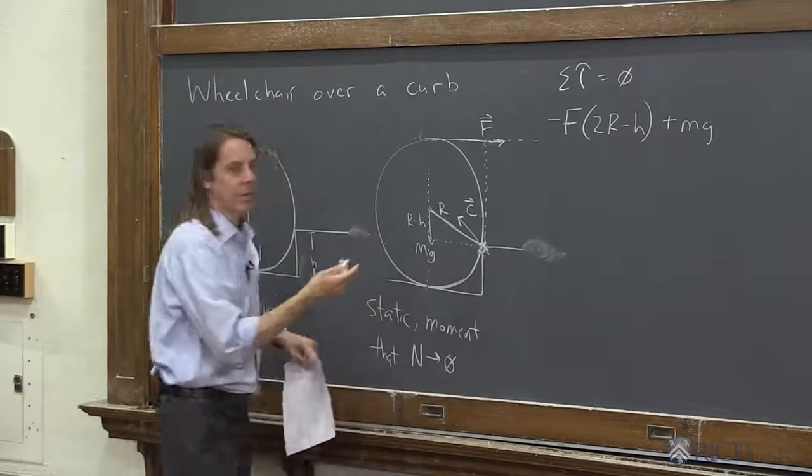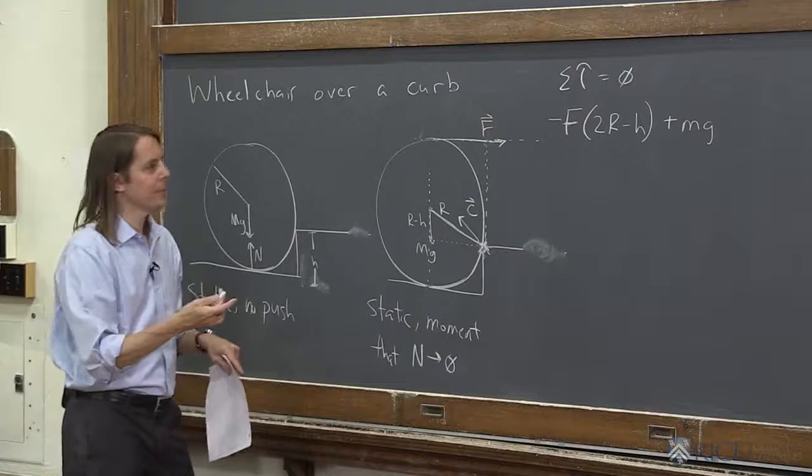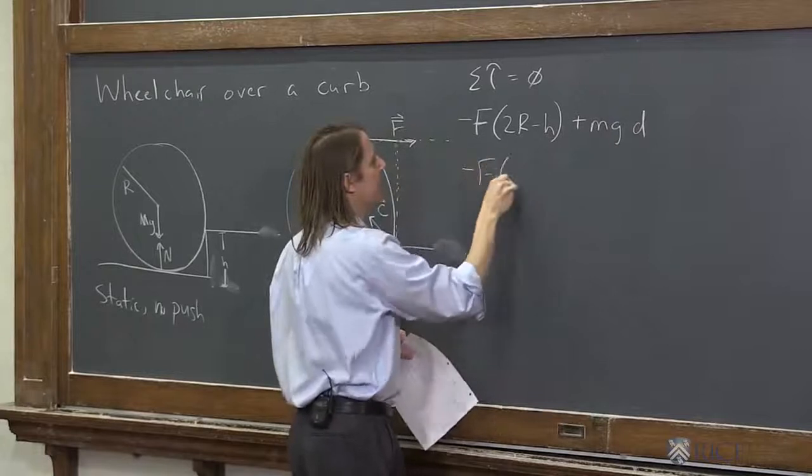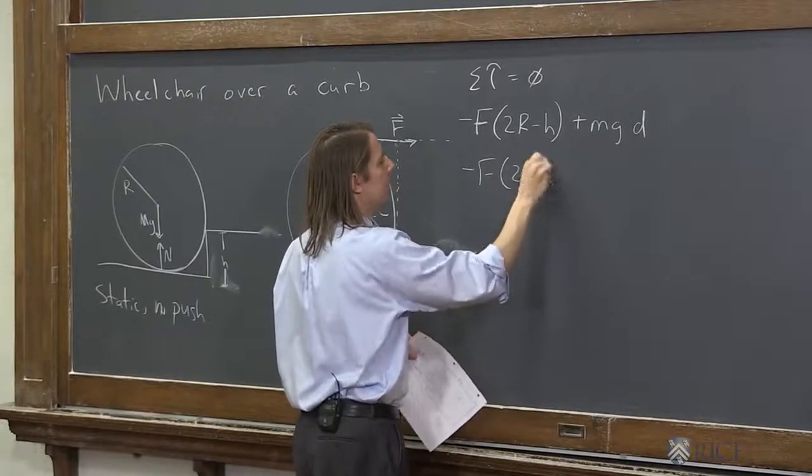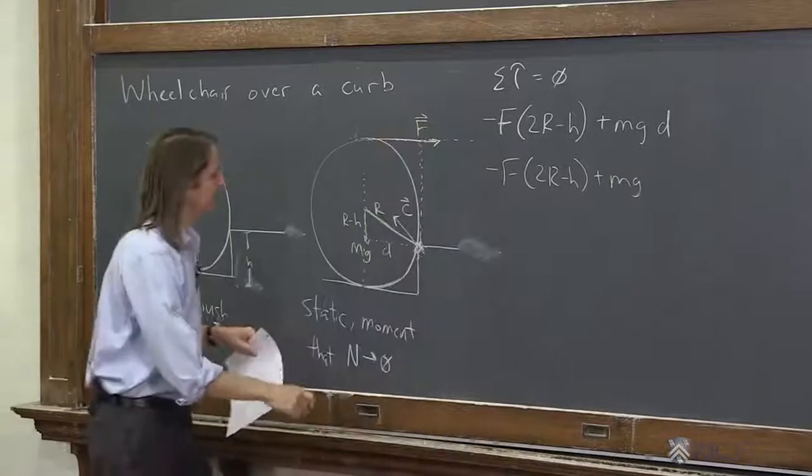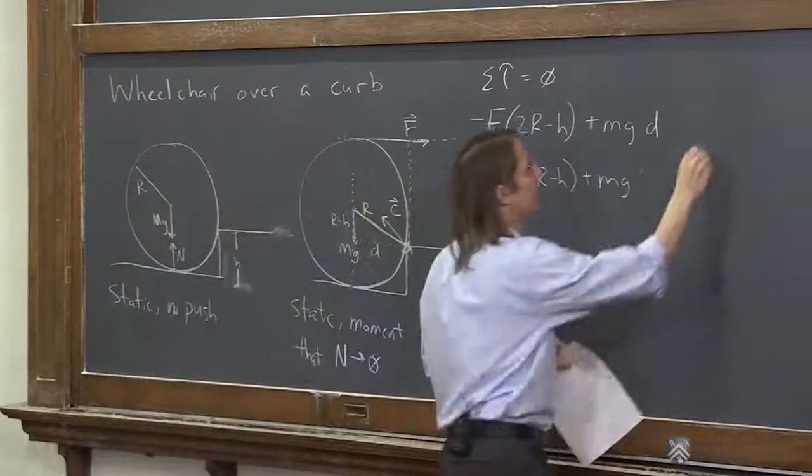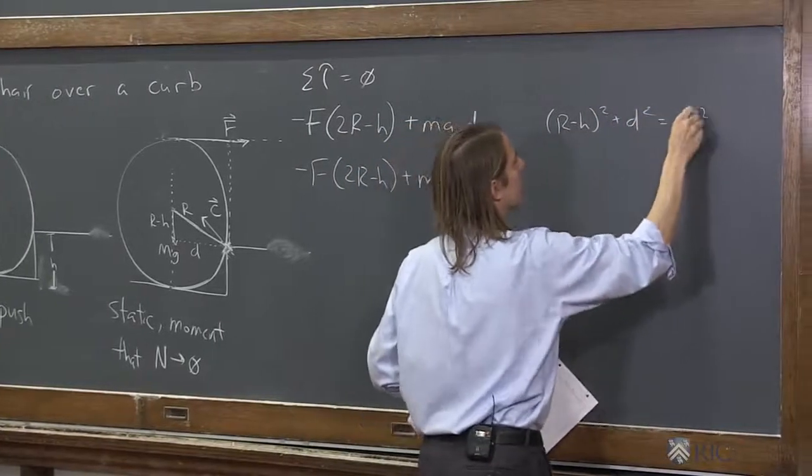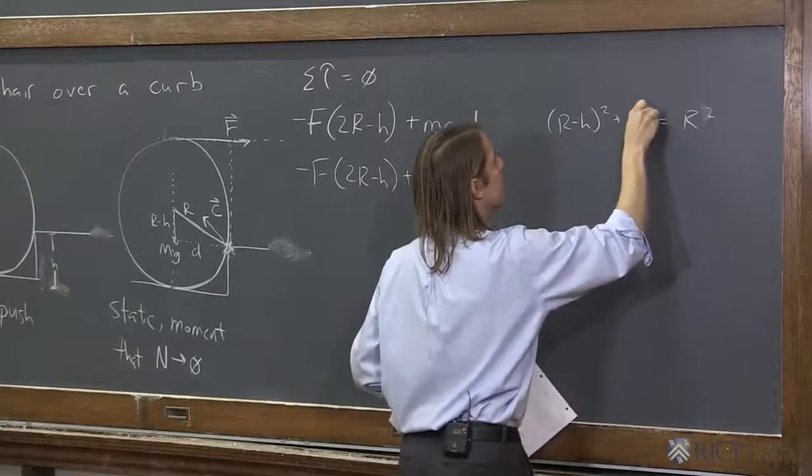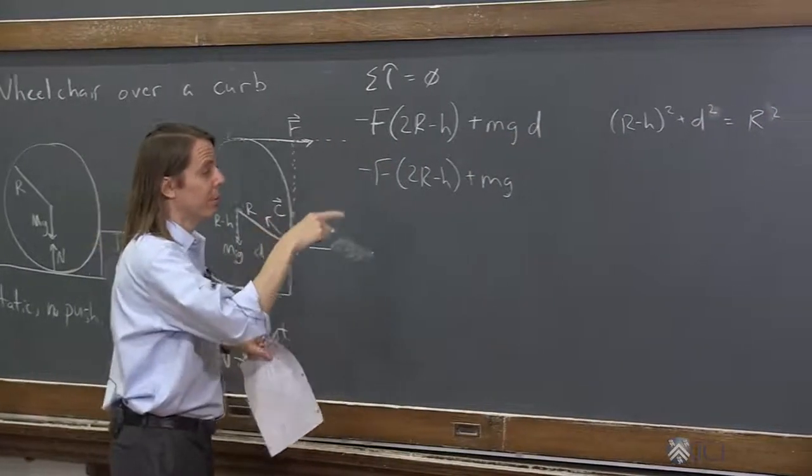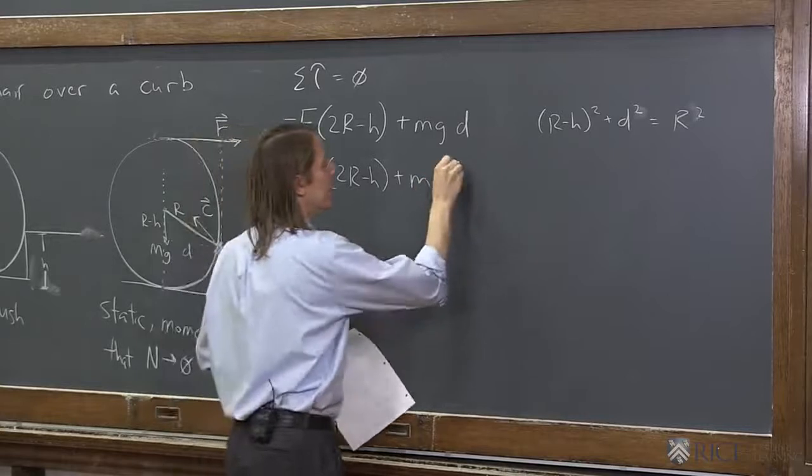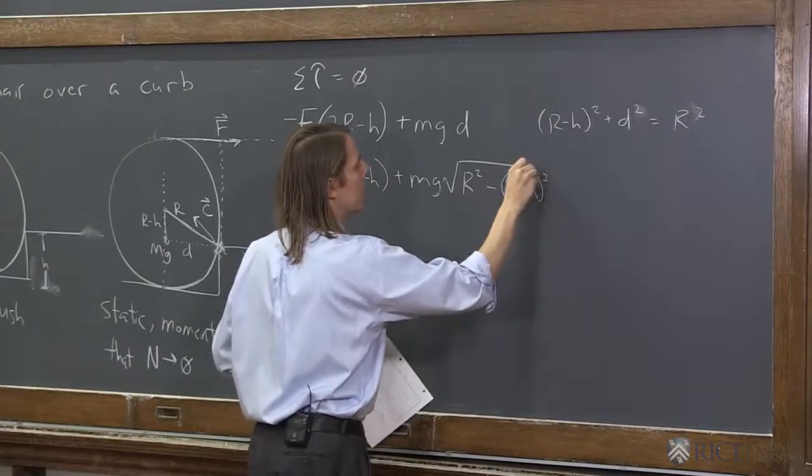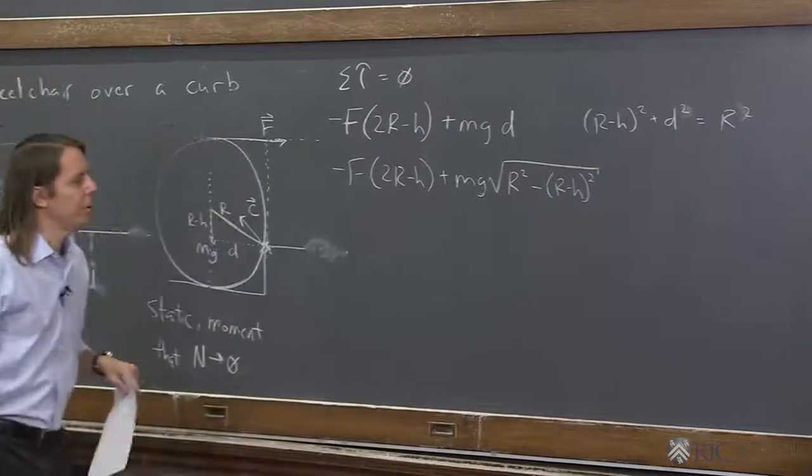So this part that we need, we get from the Pythagorean theorem. So if we called it, say, D, and we're going to put D here, we could say minus F times 2R minus h plus mg times D. So it must be that R minus h squared plus D squared equals big R squared. So D must be the square root of big R squared minus R minus h squared. So the geometry gets a little hairy, but really nothing worse than that.